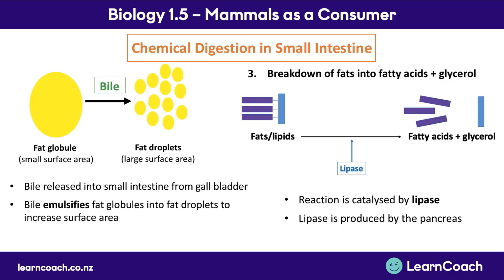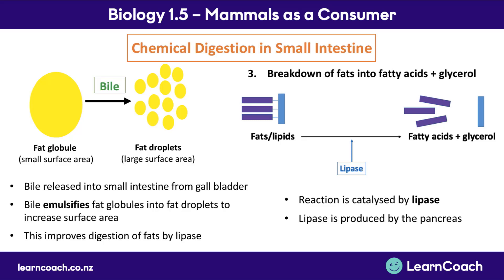For lipase to work as efficiently as possible, a process called emulsification needs to occur first. Emulsification is the breakdown of one large fat globule into lots of little fat droplets, and this is done by bile. Bile is released into the small intestine from the gallbladder. It's important to note that bile is not a digestive enzyme, but it does emulsify fats — increasing the surface area available for lipase to react with, which improves fat digestion.